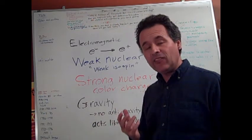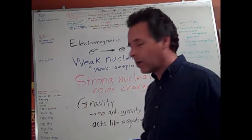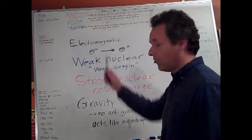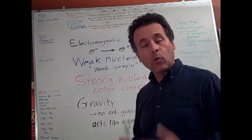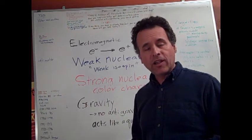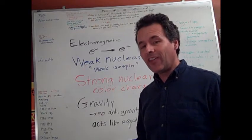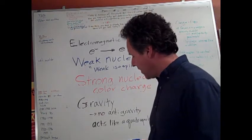Now, if I want to make an antimatter quark from a quark, what I have to do is reverse its electric charge, reverse its weak isospin, and reverse its color charge. So, where I might have a red quark, I would then get an anti-red anti-quark.